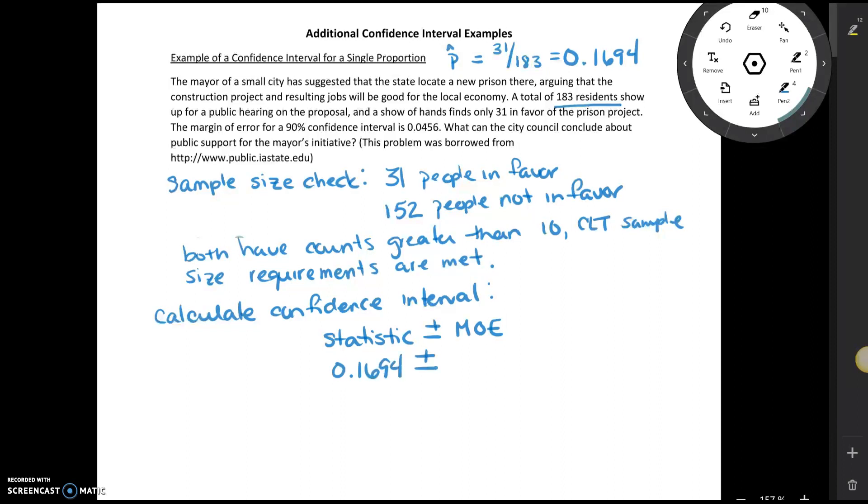So I know that my statistic is 0.1694, and then I'm going to have plus or minus the margin of error. They tell me that the margin of error for a 90% confidence interval is 0.0456. So now I can calculate my interval.